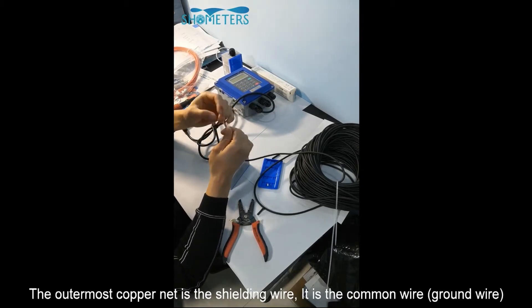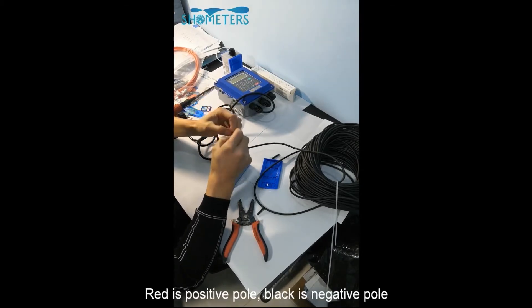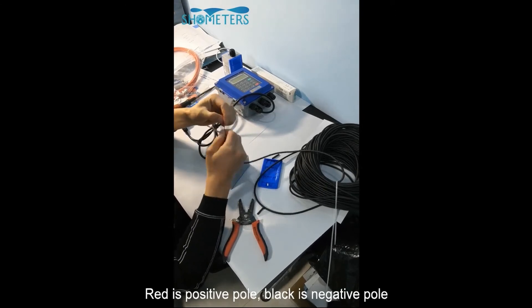It is the common wire. Red is positive pole. Black is negative pole.